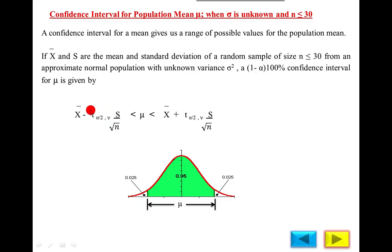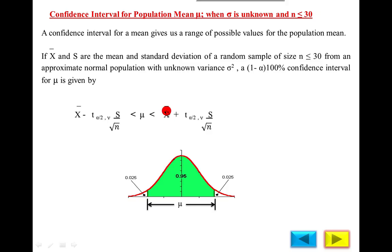We find the table value from the t-table, as already explained in testing of hypothesis. Substituting into this formula, you obtain the lower value of the population mean — the lower acceptable value. The right-hand side is the same as the left-hand side, but on the left we use a negative sign and on the right we use a positive sign. Substituting the values of x-bar, table value, sample standard deviation, and sample size, you obtain the upper value of the population mean.